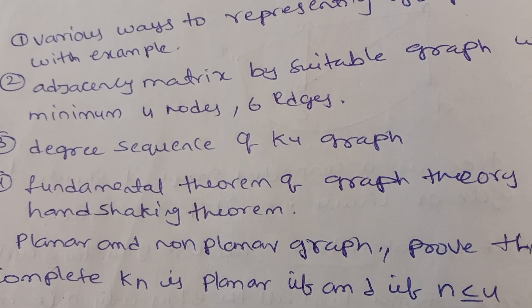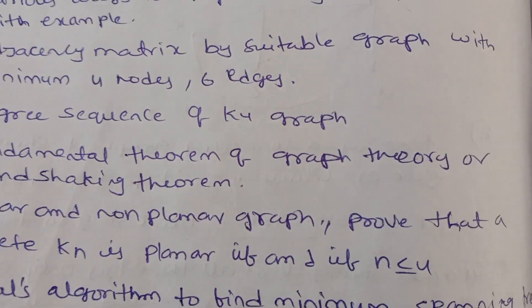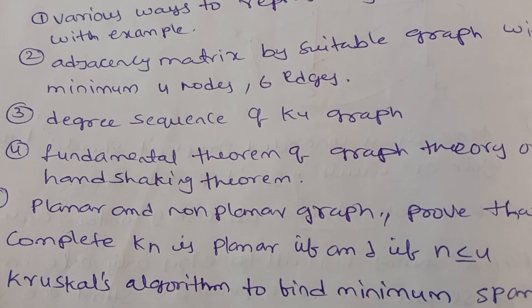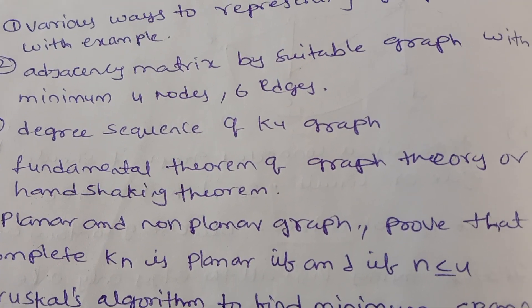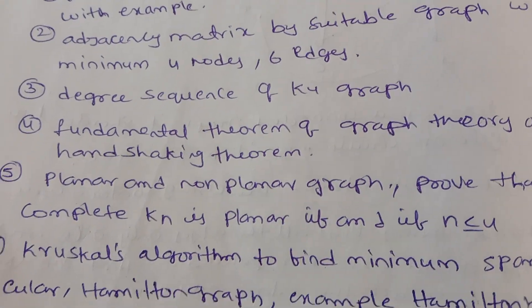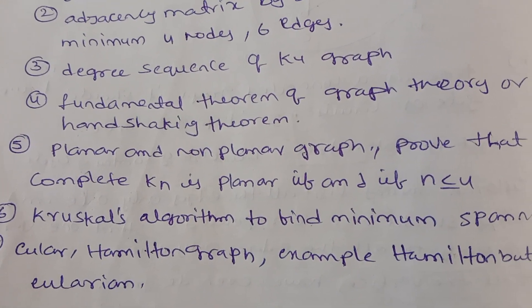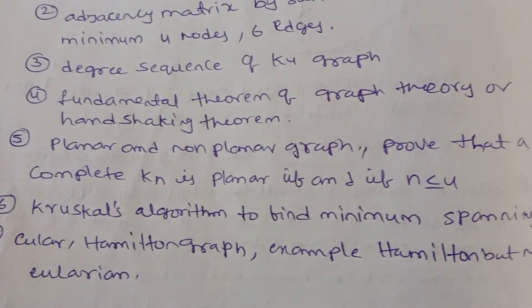Planar and non-planar graphs: Prove that a complete KN is planar if and only if N less than equals to 4. Next, sixth one: Kruskal's algorithm to find minimum spanning tree.